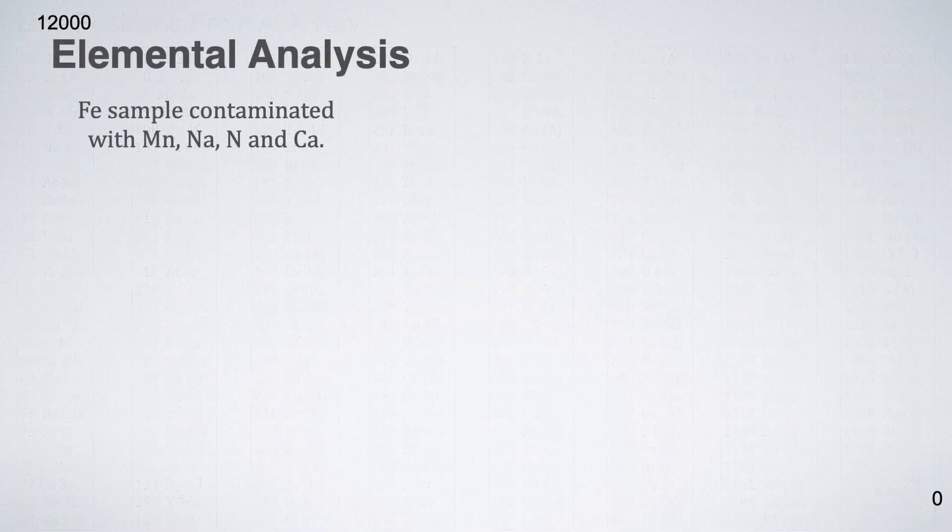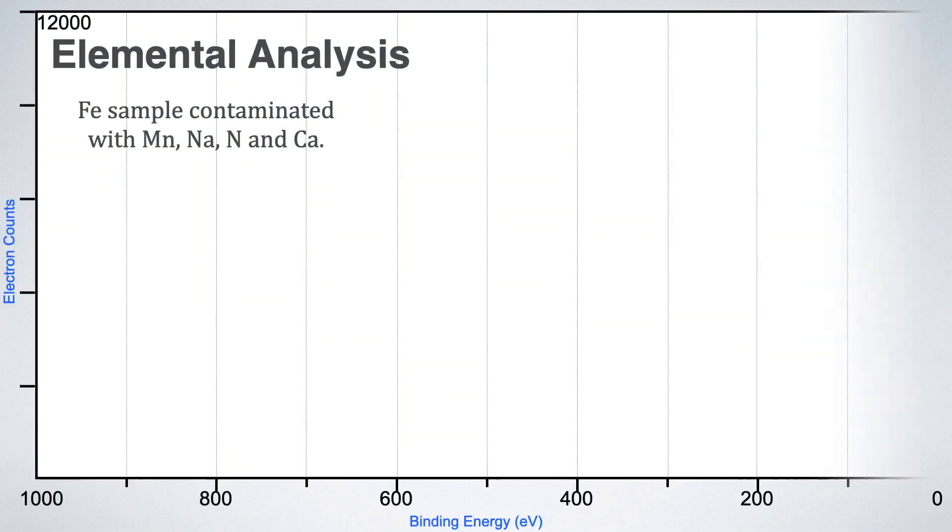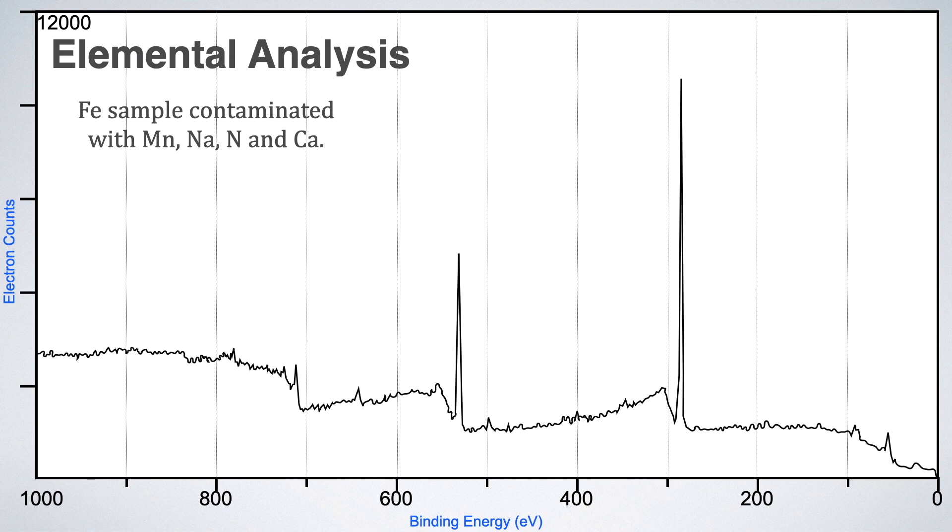Now, let's try to find the unknown peaks of a sample of iron. Here is the spectra which shows large number of small peaks. So, let's start. The peaks at 720 and 707 electron volt corresponds to iron 2p peaks. They are split into two because of spin orbital coupling. Then, there are iron 3s and iron 3p peaks at 91 and 53 electron volts respectively. But, still we have more peaks.